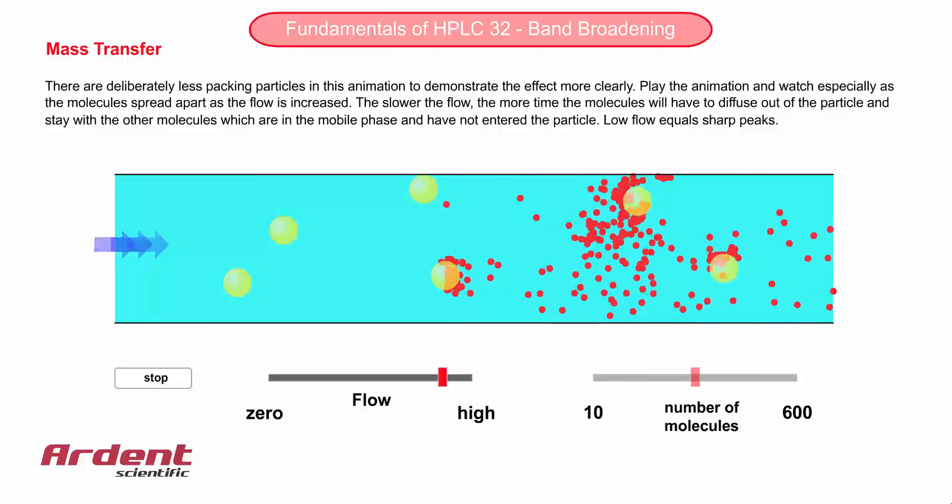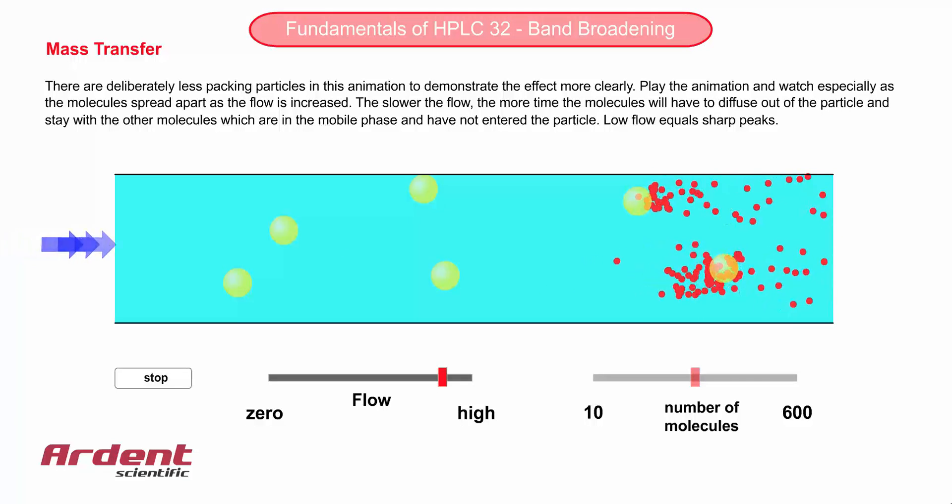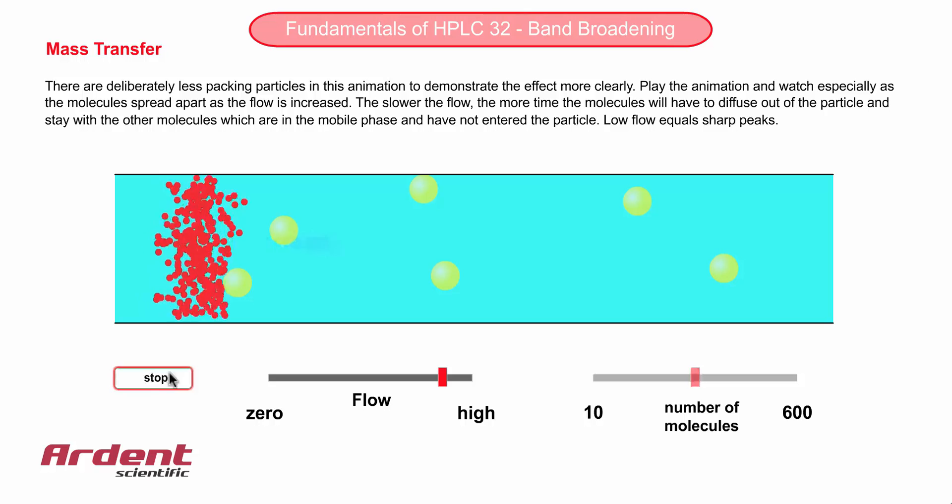If the velocity is too high, then band broadening occurs. Therefore, by slowing the mobile phase velocity, we give the molecules inside the particle more time to stay with the molecules which haven't entered a particle.